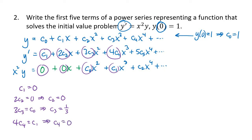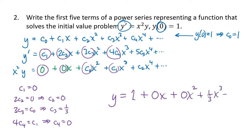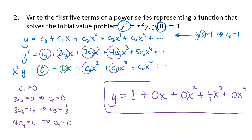Our power series solution is y = 1 + 0·x + 0·x² + (1/3)x³ + 0·x⁴. We were asked for the first four terms, so that's our answer.